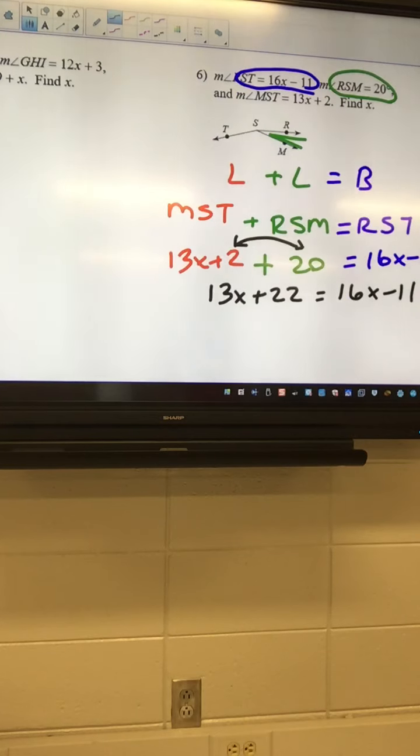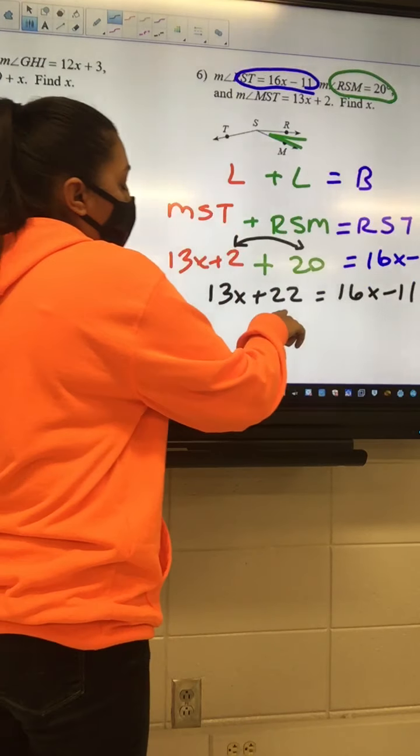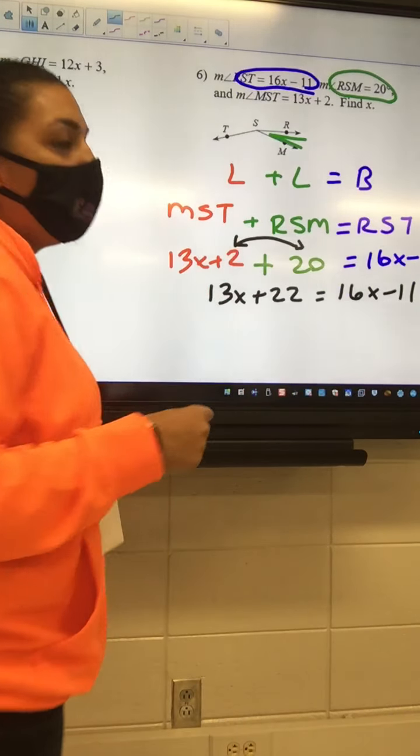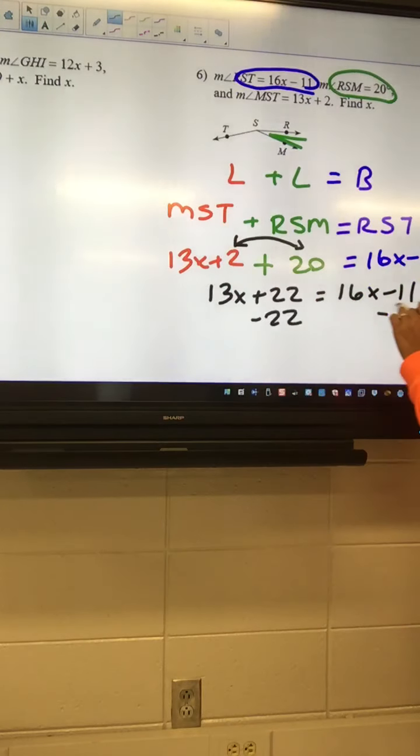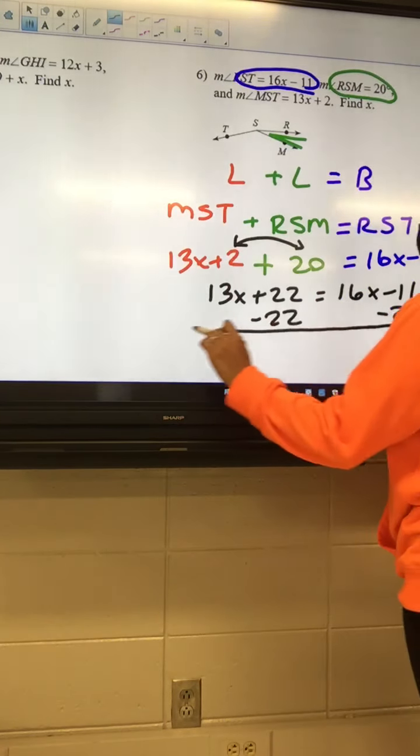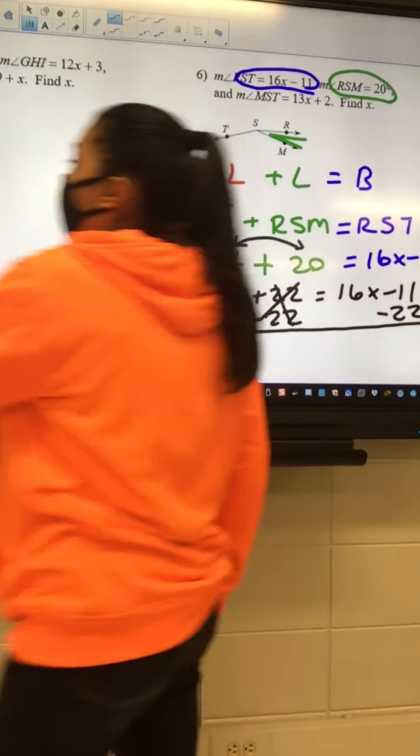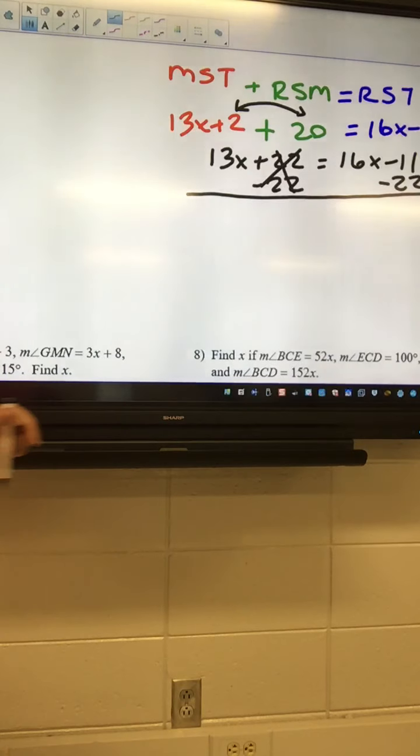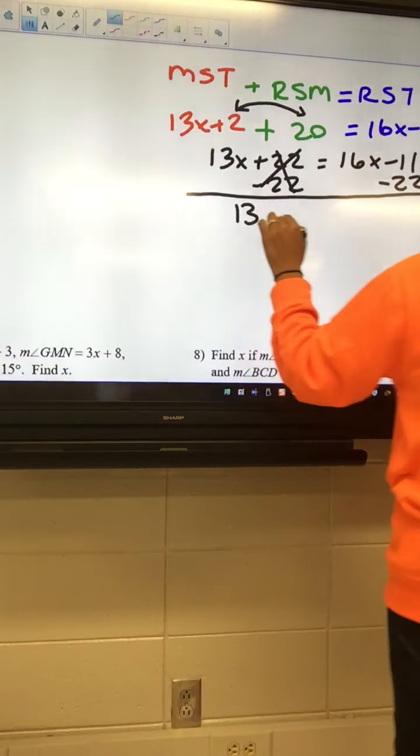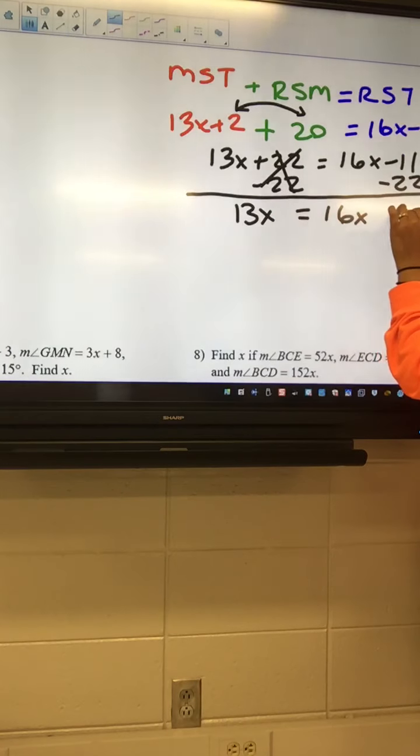And if I was looking at my steps, it says move the numbers to the right. So I'm looking over here, and I say, well, here's a number, so I need to move it to the right. So I have a plus 22, so I'm going to minus 22.